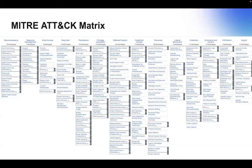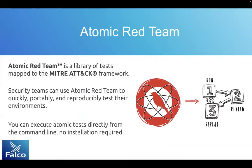We won't go through every single tactic and technique in this session. We'll cover a few test scenarios that we can generate through Atomic Red, and give context around those tests as we're performing them. Why are we using Atomic Red? Just like FALCO, Atomic Red is an open source solution. Security teams can quickly use it for free. It's portable, a way to consistently reproduce the same test scenarios irrespective of who's performing the test. They're already pre-configured and mapped to the MITRE ATT&CK matrix. You can quickly map the different tactics being performed and see if FALCO is able to detect those in real time.